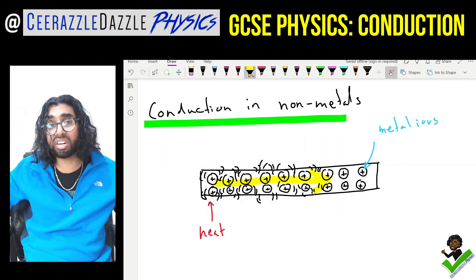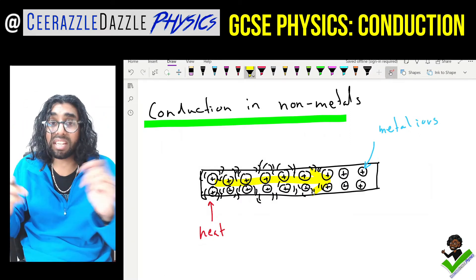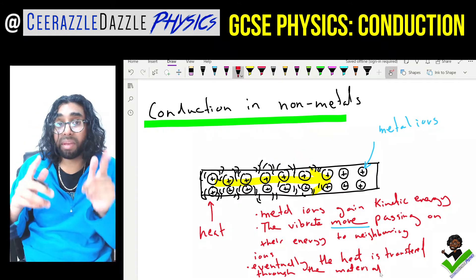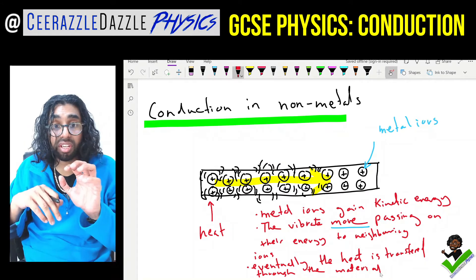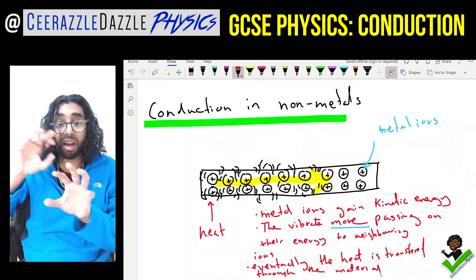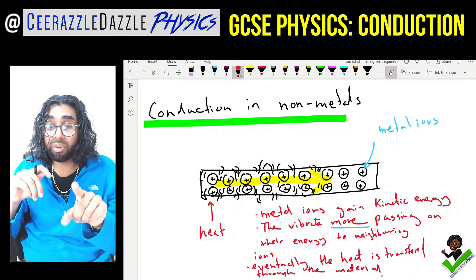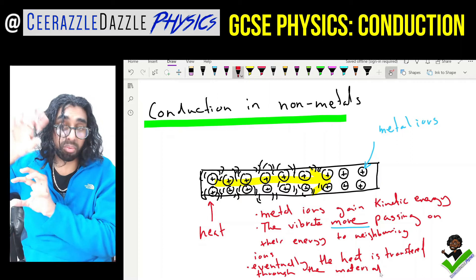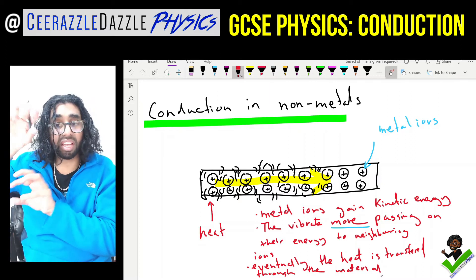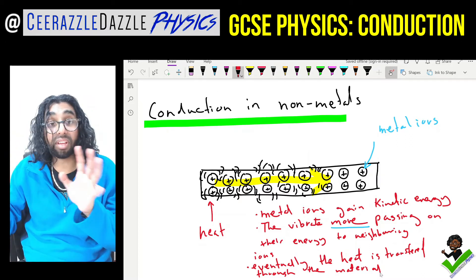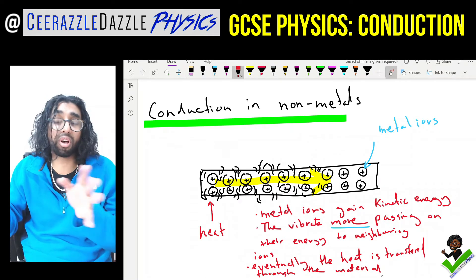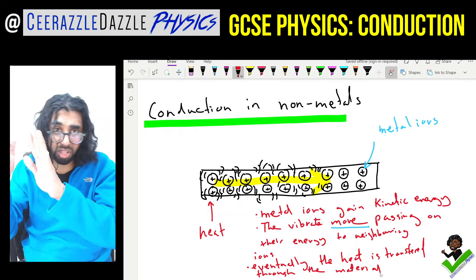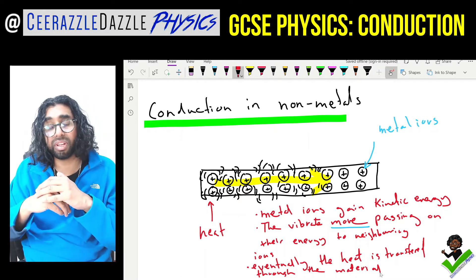To summarise: metal ions gain kinetic energy when heated, they vibrate more — notice they vibrate more, not that they start vibrating, because they're already vibrating. They pass on their energy to nearby ions, and eventually the heat is transferred through the whole material, like a set of dominoes.